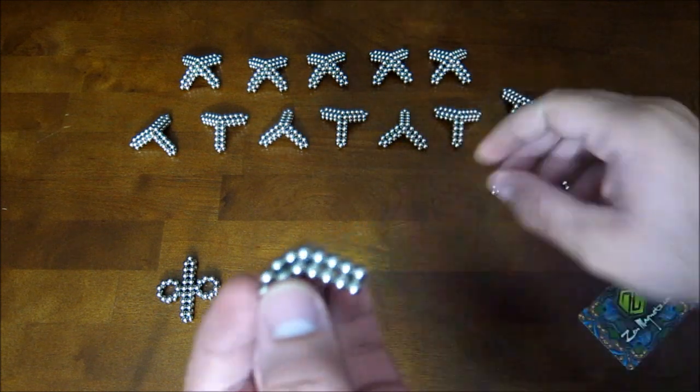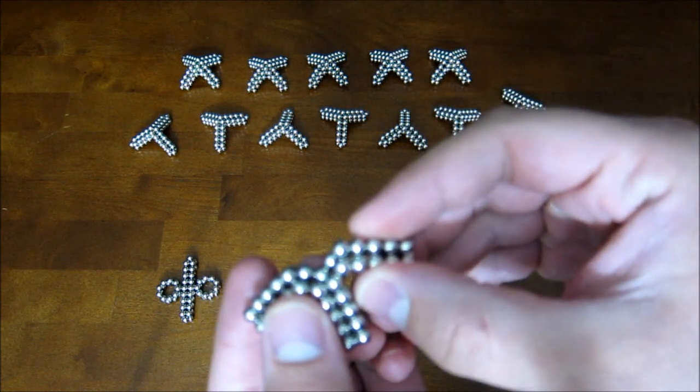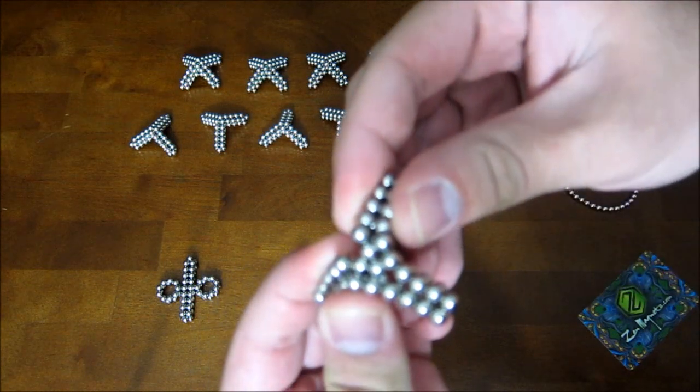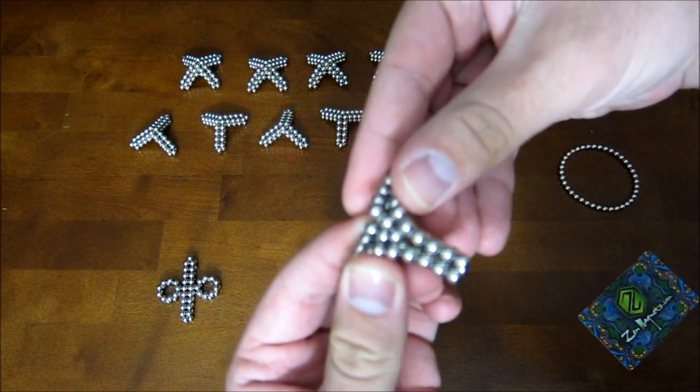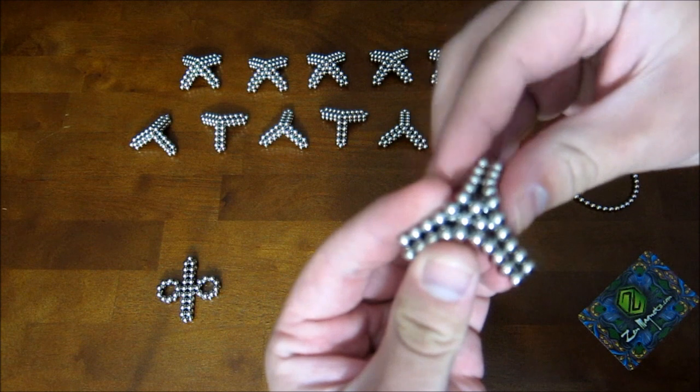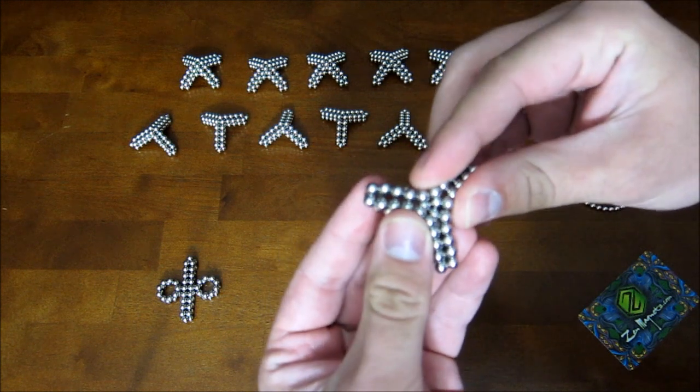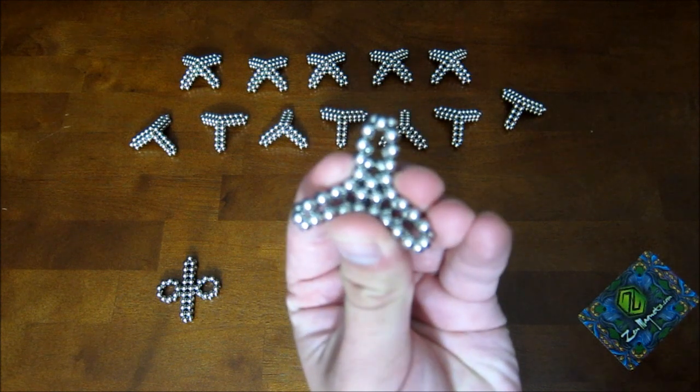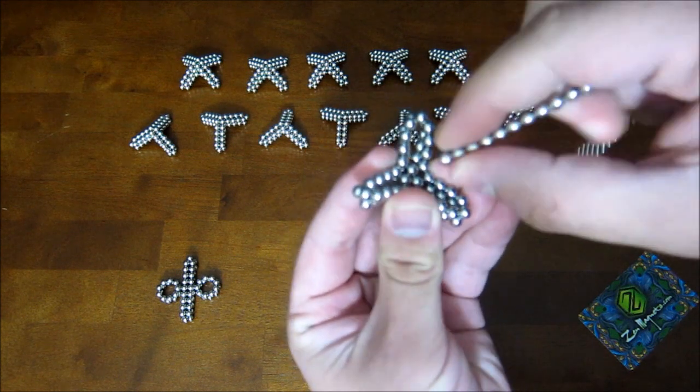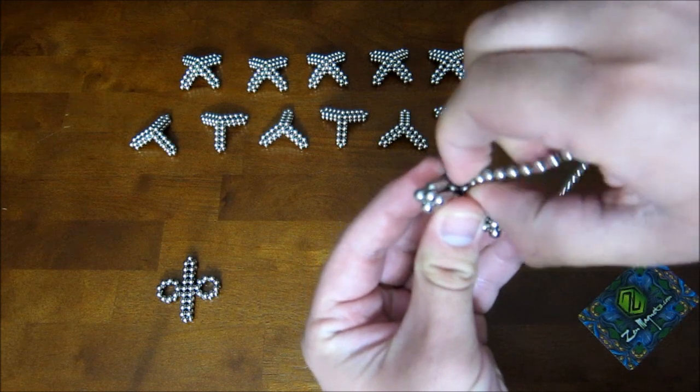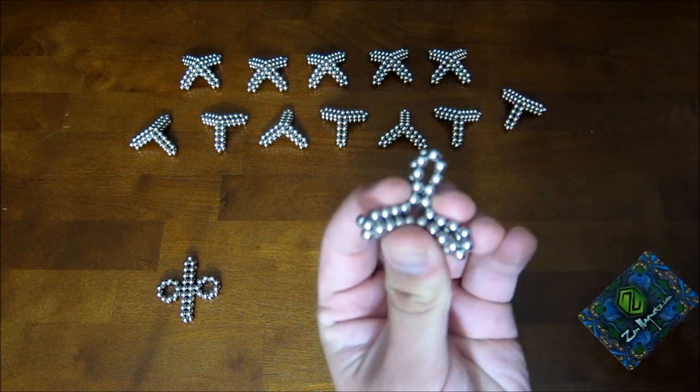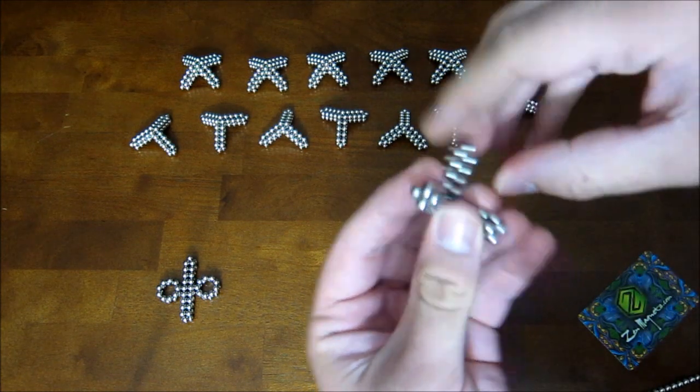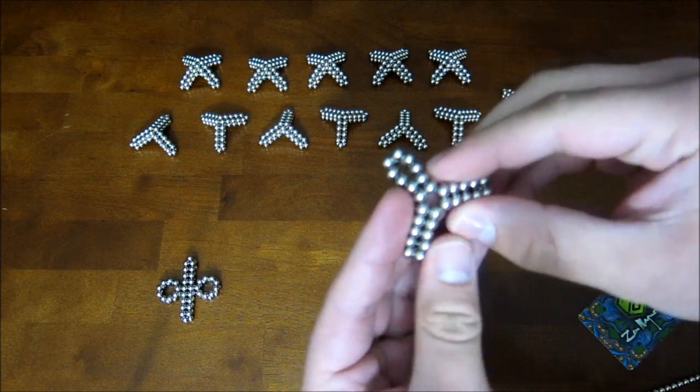You attach them together like this on their ends, bend them around until they pop together, then you can bend the legs up, and those three magnets in the center there, you can take a chain and take those out until you have something that looks like this.